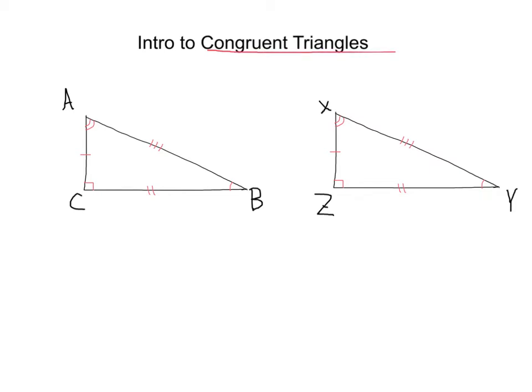Congruent triangles, as you may guess, are just two triangles that are exactly the same. For example, here below we've got triangle ABC and we've got triangle XYZ.